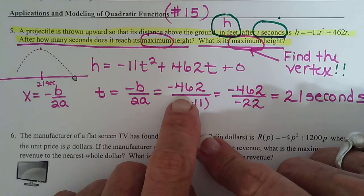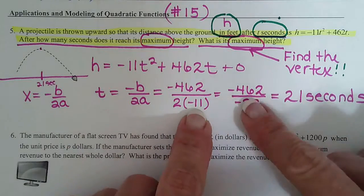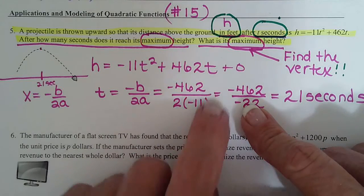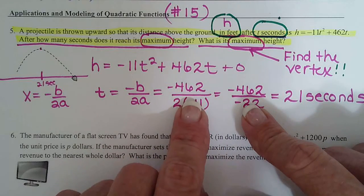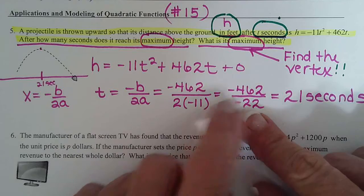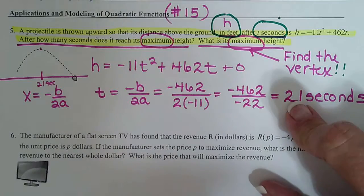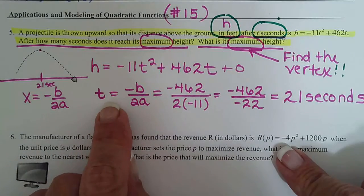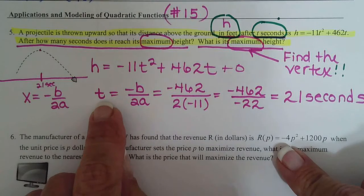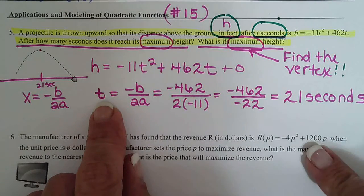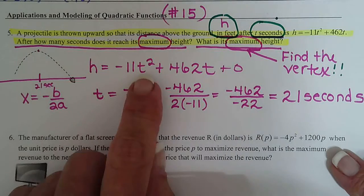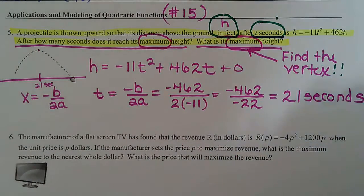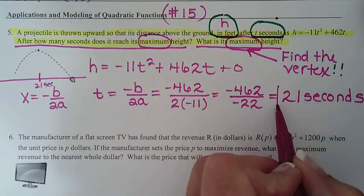So the opposite of b, negative 462, over 2 times a, negative 11. Divide those two out. Remember how I said you cannot type this into the calculator how it is, so you have to work that out first then do the division. It came out to 21, and t is seconds. It's so important that you put that t there, otherwise you're going to put feet on that and think that's how high the projectile is. This is always x, and our x in this problem is t. So that's our first answer: after how many seconds does it reach its maximum height?